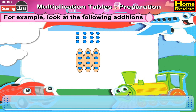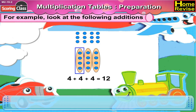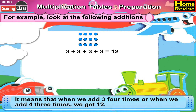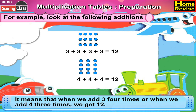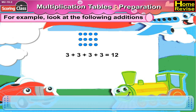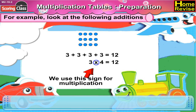Let us look at the other arrangement. Here we have 3 sets of 4 dots. 4 plus 4 plus 4 is also 12. It means that when we add 3 four times, or when we add 4 three times, we get 12. 3 taken 4 times is 12. That is, 3 plus 3 plus 3 plus 3 is equal to 12. We use the sign cross for multiplication.